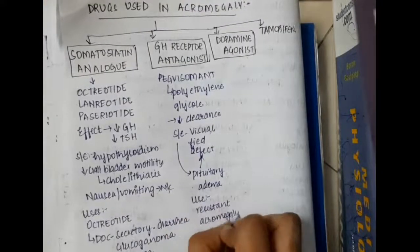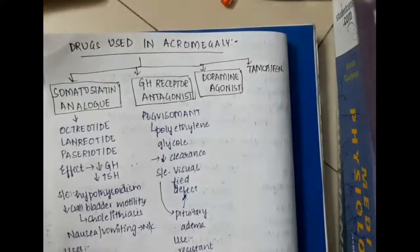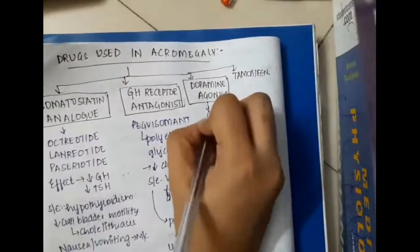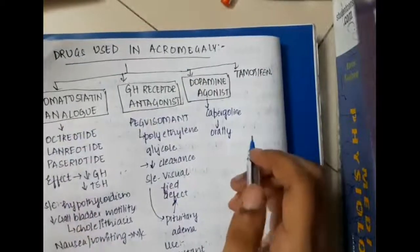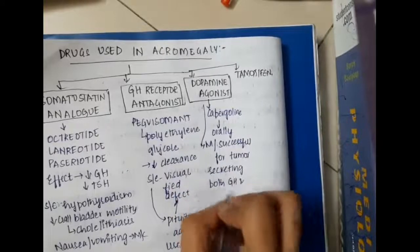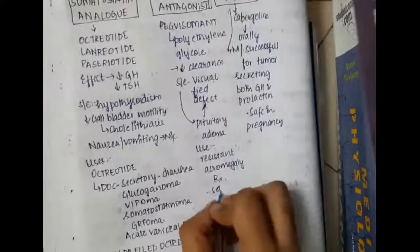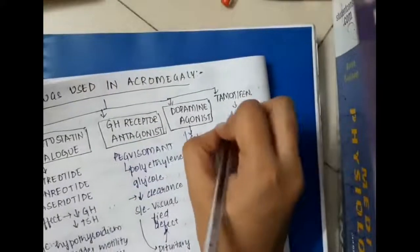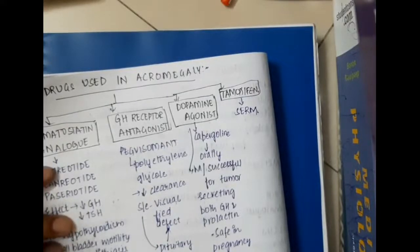The dopamine agonist used is mainly cabergoline, which is given orally. Cabergoline is most successful for tumors secreting both growth hormone and prolactin, and is safer in pregnancy. The last drug used in acromegaly is tamoxifen, which is a selective estrogen receptor modulator.